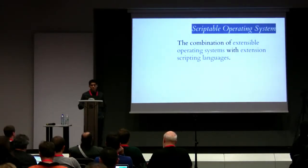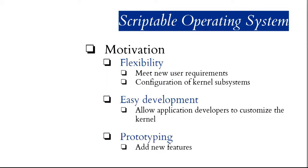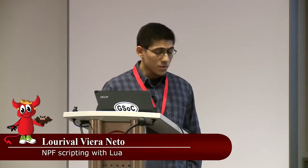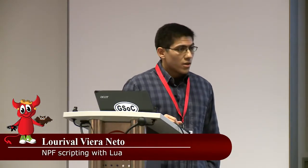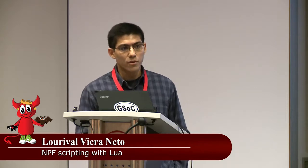So what is a scriptable operating system? A scriptable operating system is the combination of an extensible operating system with a scripting language to write extensions in an operating system. The motivation is to give more flexibility to the operating system, helping users to meet new requirements and to configure kernel subsystems, and also to allow non-kernel developers to change the behavior of the kernel.